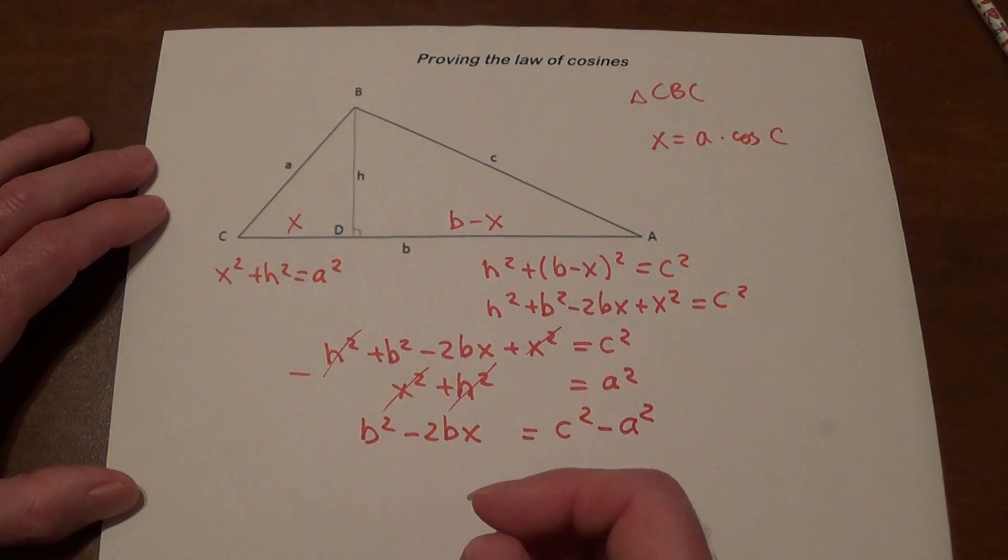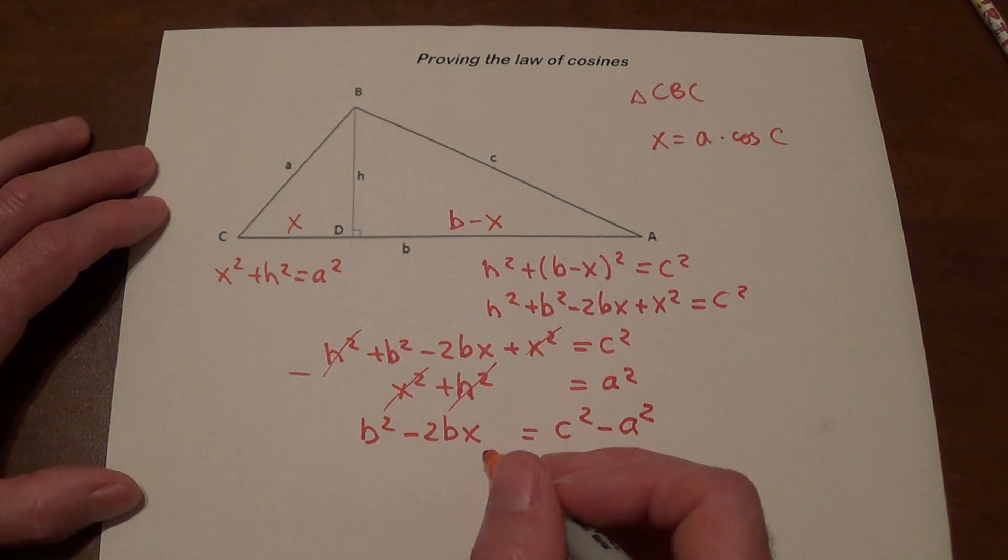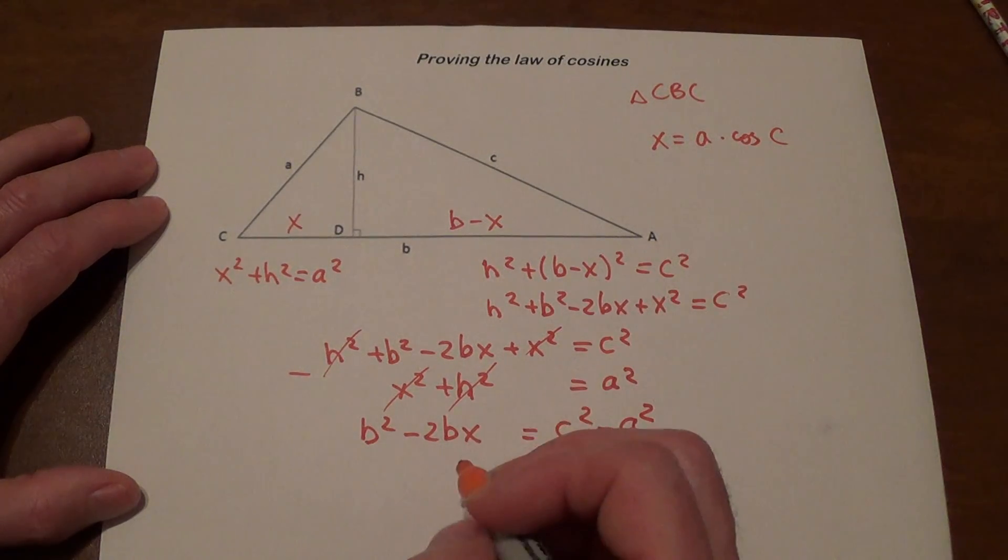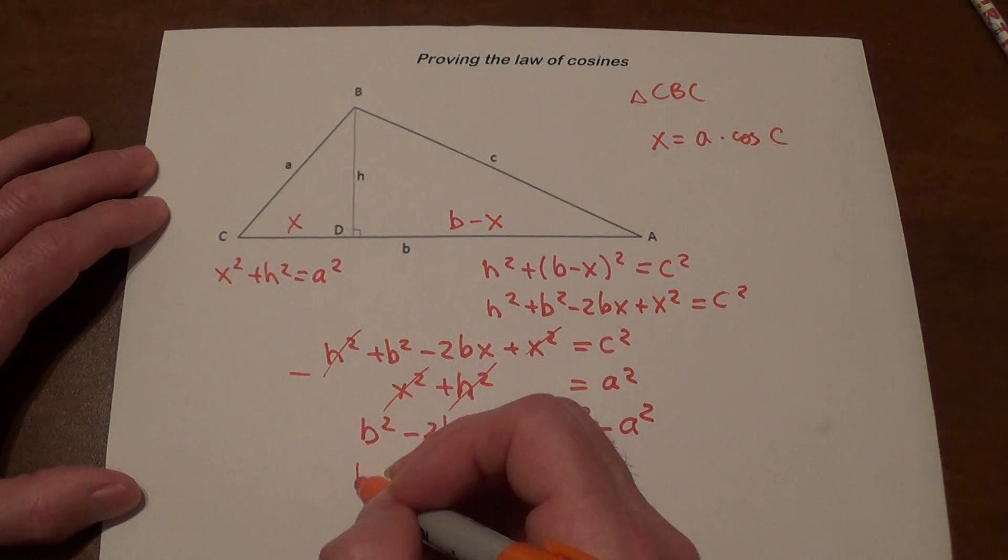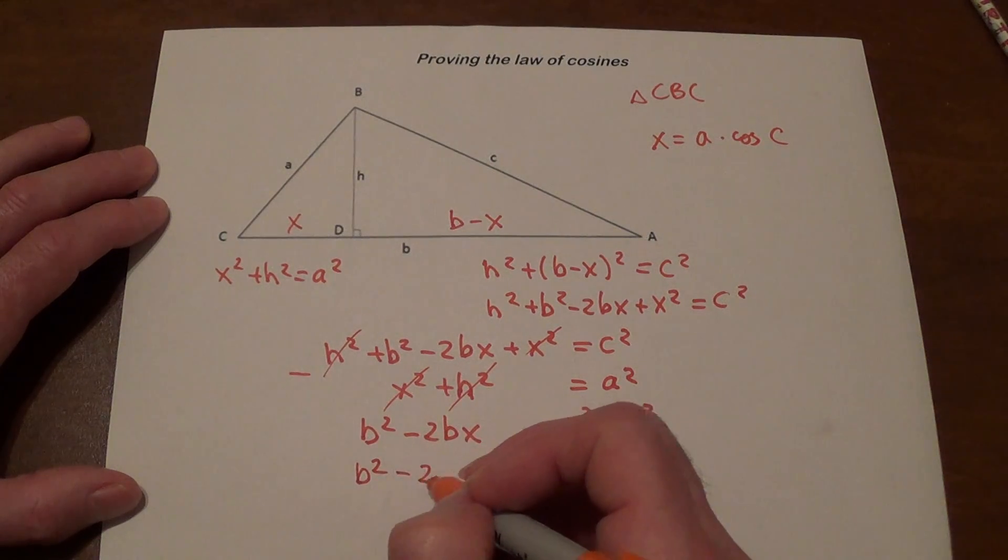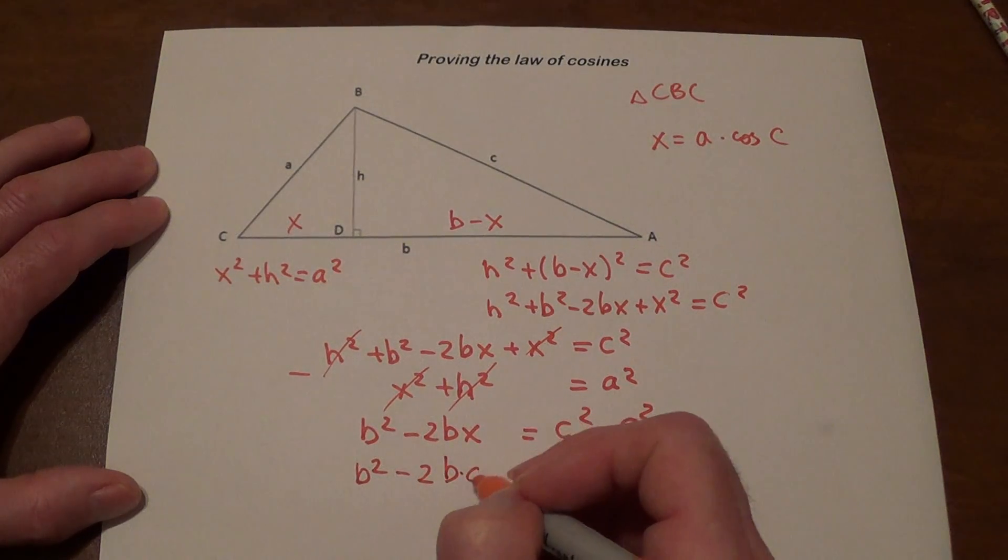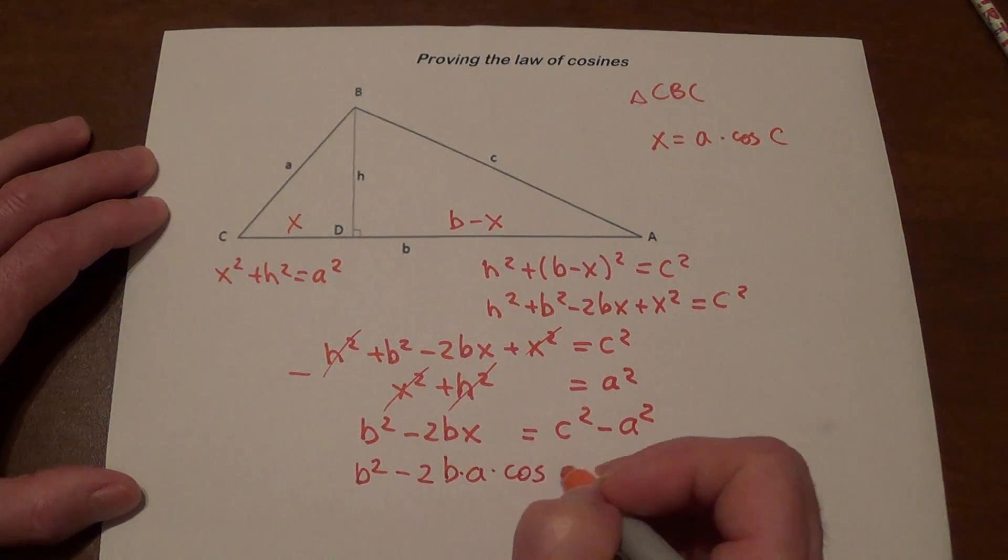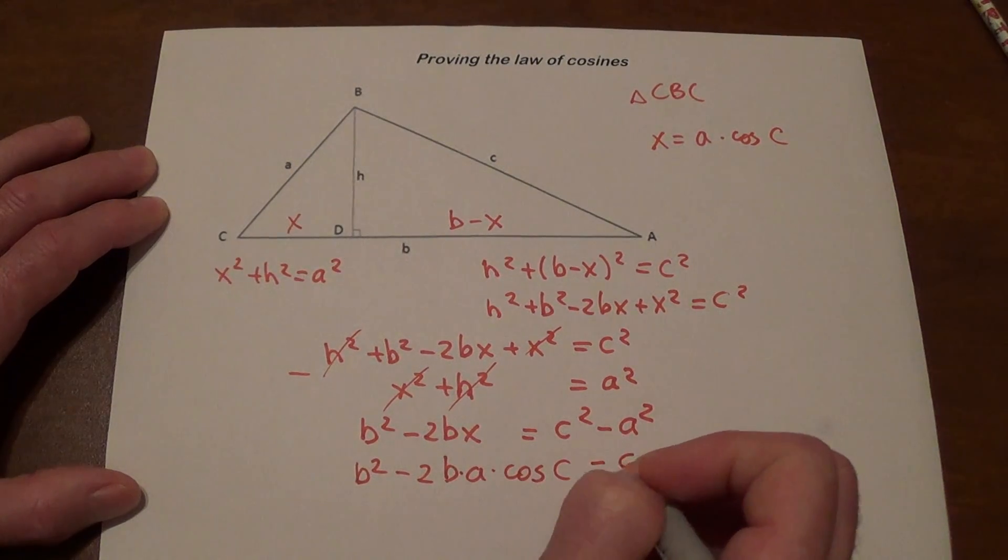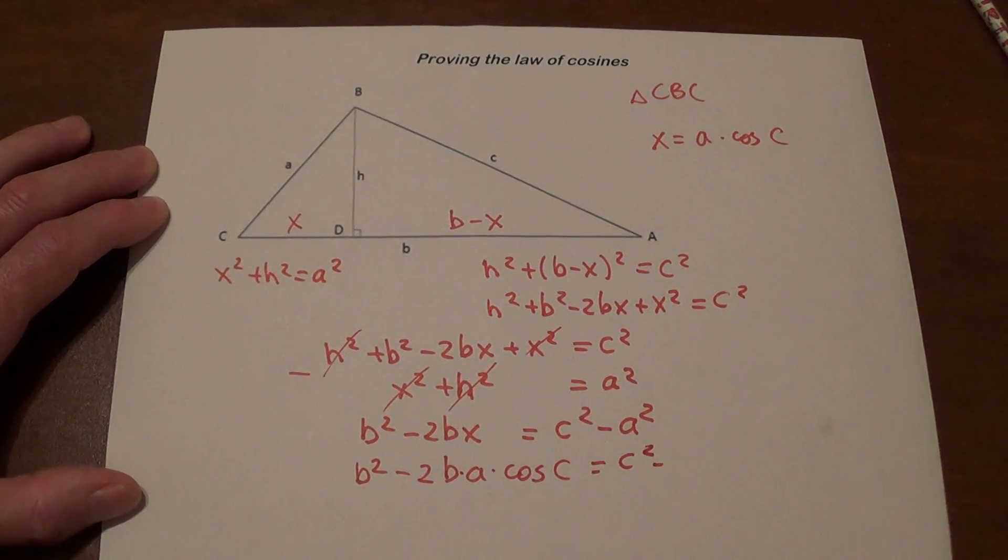We will remember at this point that x is a times cosine c. So we're going to rewrite it as b squared minus 2b times a times cosine c equals c squared minus a squared.